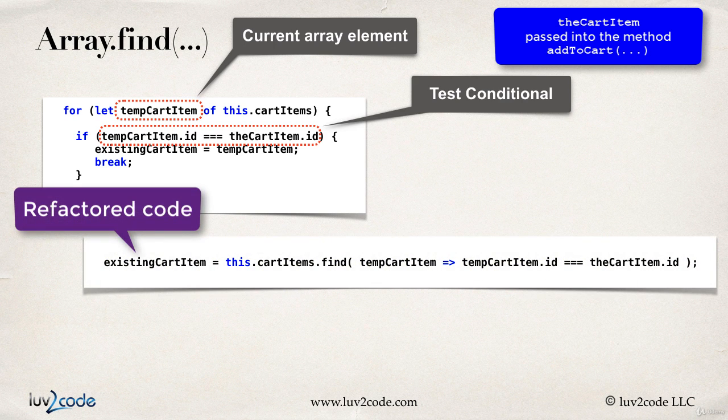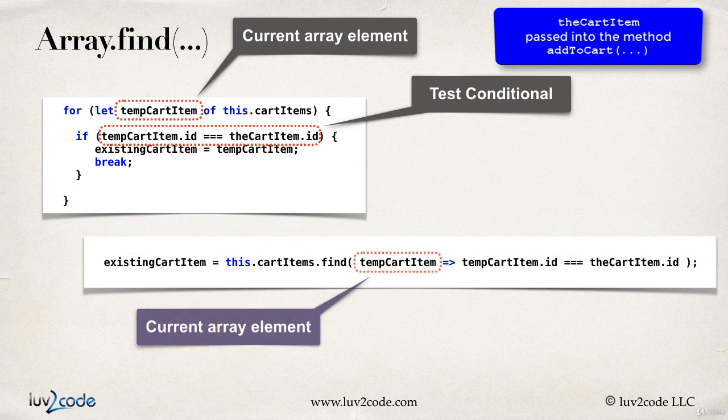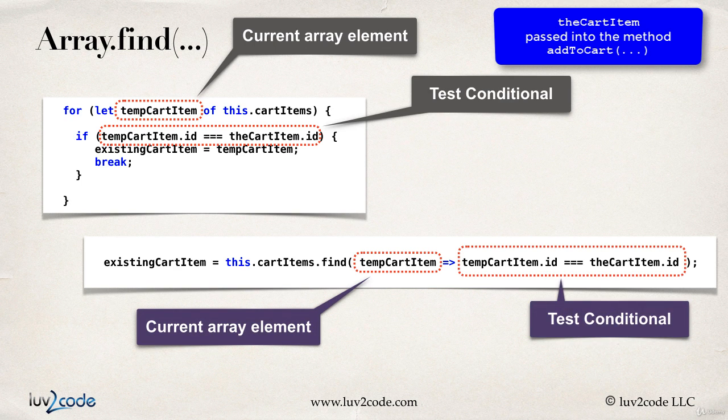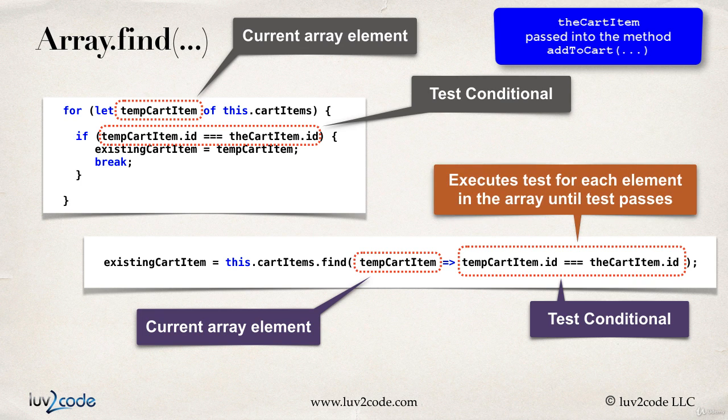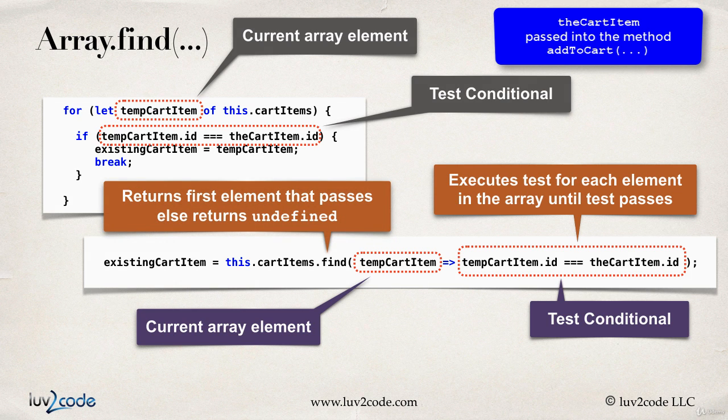Now at the bottom here, we'll have this new code or a replacement or a refactored code. And so we'll make use of this current array element, so that's the tempCartItem. And then we have this test conditional tempCartItem.id equals theCartItem.id. And so it's going to execute the test for each element in the array until the test passes. So it'll do the looping in the background for us. And so it's going to return the first element that passes the test, else it returns undefined.